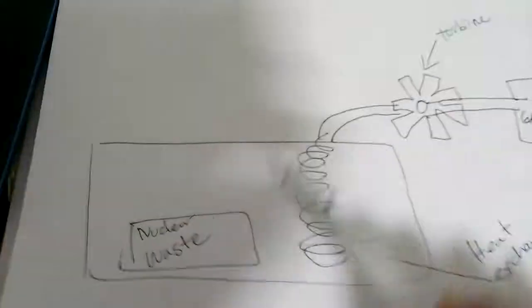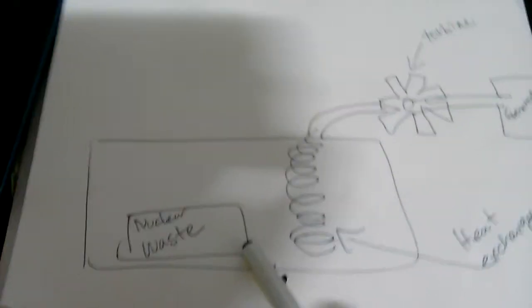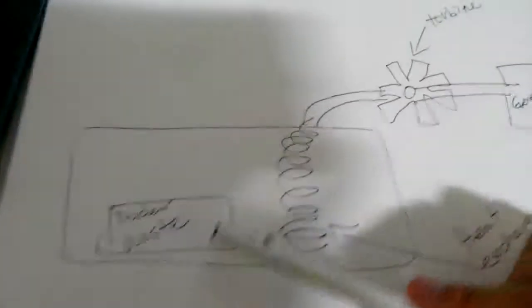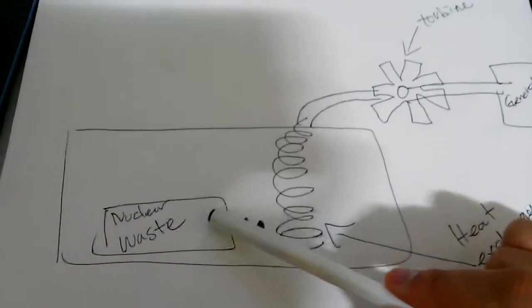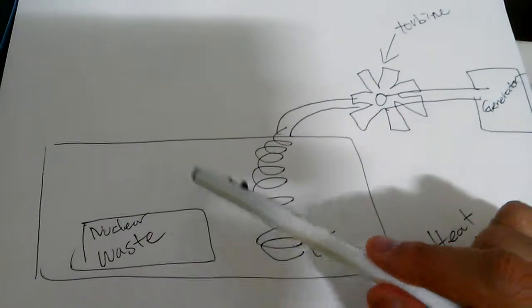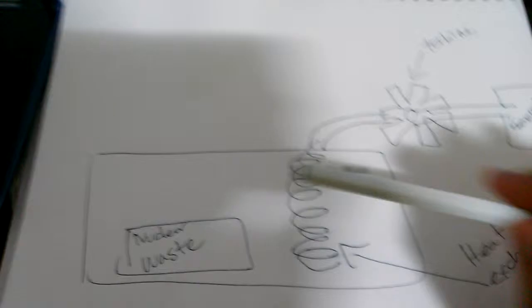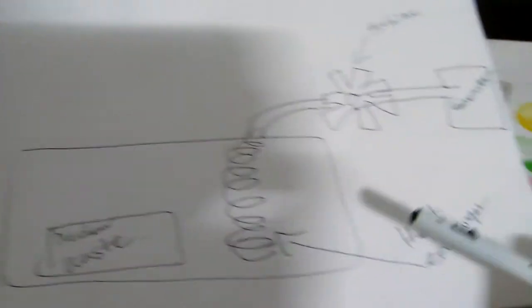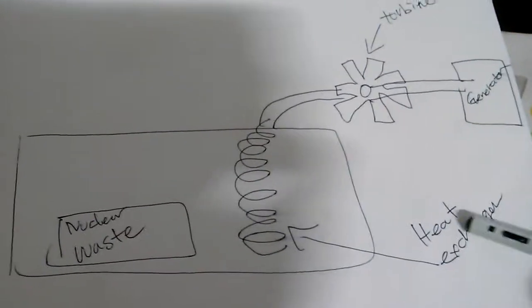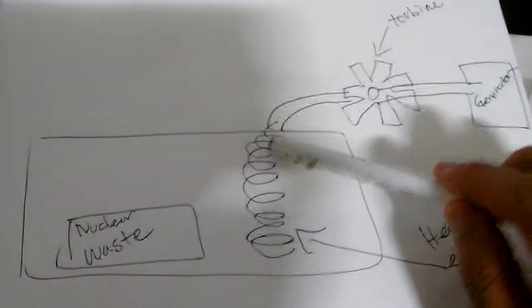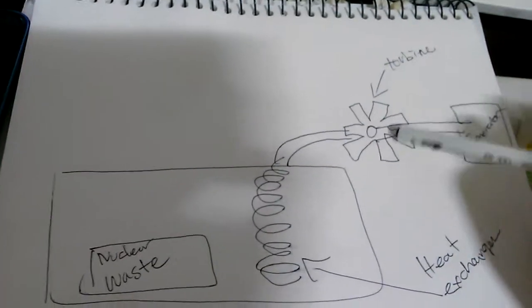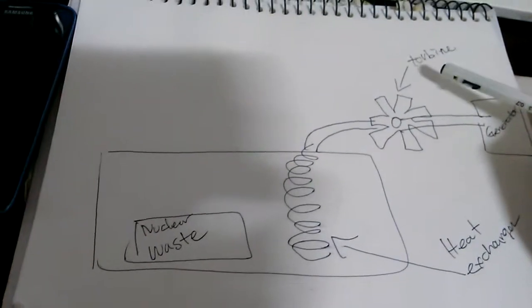Nuclear waste produces heat energy and gamma rays, so we can use that heat with a heat exchanger and a turbine.